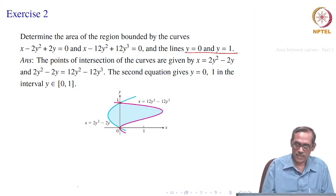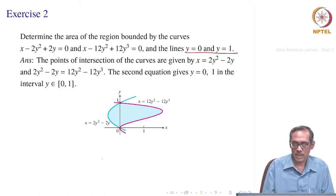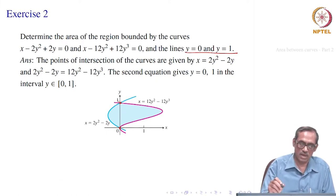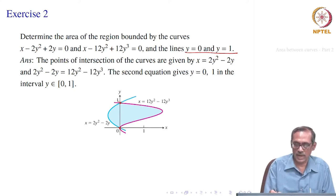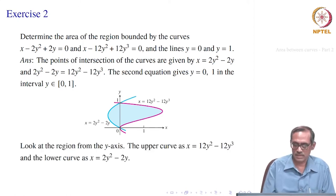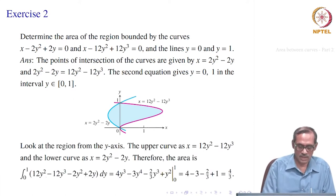Now, how to get this area? You can do it in many ways. One is to divide into sub-portions and integrate through x, but here x is given as a function of y, so it is quite natural to integrate with respect to y. Looking from the y-axis, the pink curve is on top and the blue curve is on the bottom. So we can write the integral from 0 to 1 of (12y squared minus 12y cubed) minus (2y squared minus 2y).